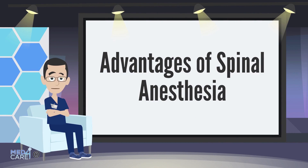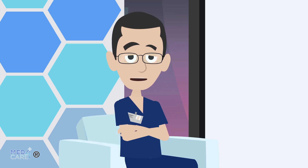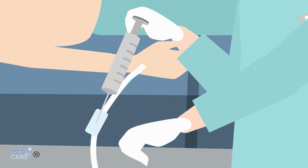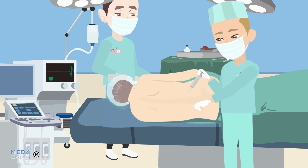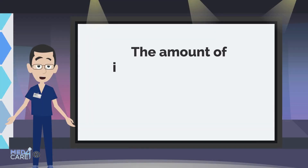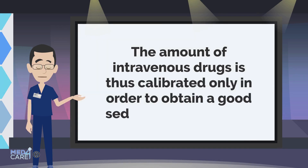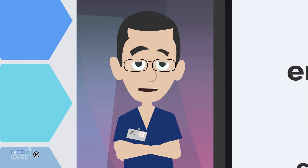Advantages of spinal anesthesia: spinal anesthesia has a number of advantages over conventional general anesthesia. Among the intraoperative advantages is avoiding the use of intravenous drugs. During surgery, spinal anesthesia eliminates pain in the area downstream of the puncture. Since the pain is completely abolished, it is not necessary to administer additional pain medication during surgery. The amount of intravenous drugs is thus calibrated only to obtain good sedation or relaxation, avoiding in particular opioid drugs that have different side effects.